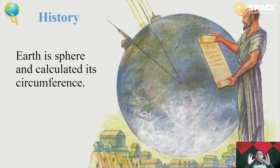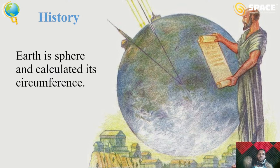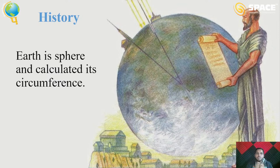This was strange for Eratosthenes to believe, because he knew that if shadows were disappearing in Syene, the same should happen in Alexandria. He tried to observe but found shadows in Alexandria. So he concluded that the Earth's shape is not flat — because if the sun is so huge and casts zero shadow at one place, other places should also have zero shadow. If they don't, the Earth must be curved, not flat. He assumed it to be a sphere.